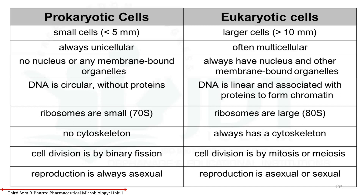Prokaryotics reproduce usually in an asexual way, while eukaryotics have both asexual as well as sexual modes of reproduction. This is the key difference between prokaryotic cells and eukaryotic cells.